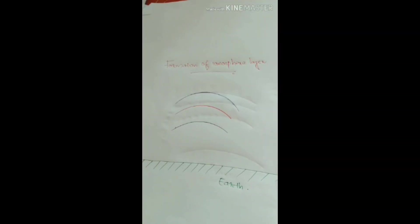Now let's discuss the formation of ionosphere layer which is very important for skyway propagation. As you know, the sun radiates very strong waves called cosmic rays. I am drawing the cosmic rays coming from the sun.